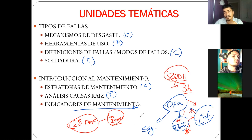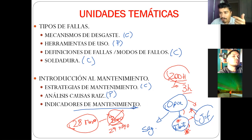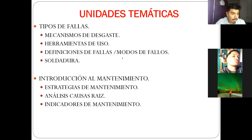Lo bueno es que si el mantenedor te dice que le entregues el equipo para hacerle el mantenimiento y tú te niegas, probablemente el 29 de mayo tu equipo va a fallar, y no va a estar detenido tres horas sino que puede estar detenido doce horas o dos días. Por eso usted tiene que conocer algunos indicadores que ellos manejan, como la confiabilidad, la disponibilidad, los backlogs, la mantenibilidad, porque es un mundo muy pequeño y tiene que conocer todas las posibles opciones que va a estar constantemente conversando con sus colegas.